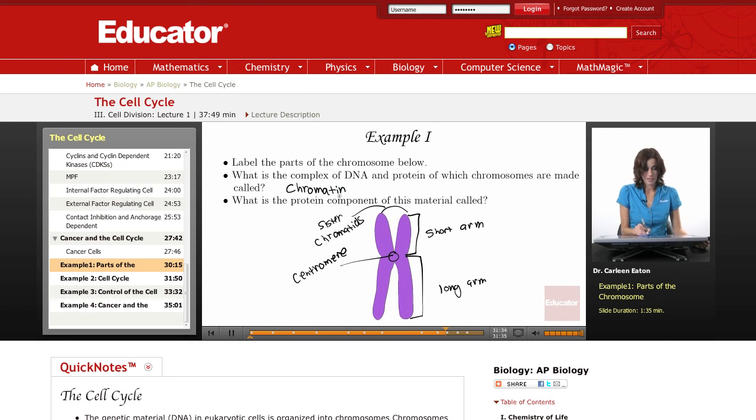What is the protein component of this material called? Remember, chromatin is made of DNA and protein. What is this protein? It is histone protein. So, histone proteins plus DNA equals chromatin, and that is what a chromosome is composed of.